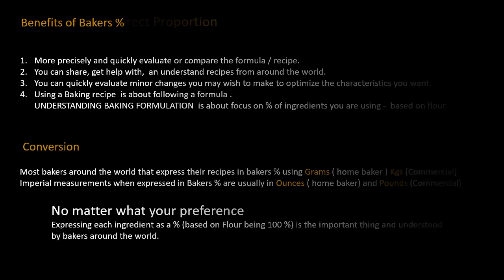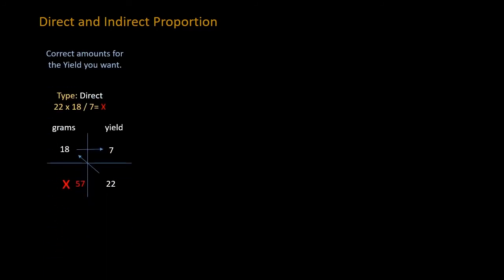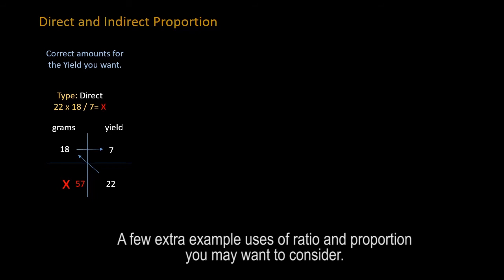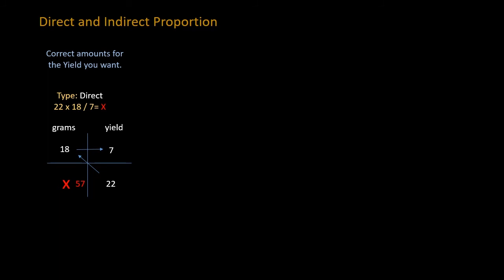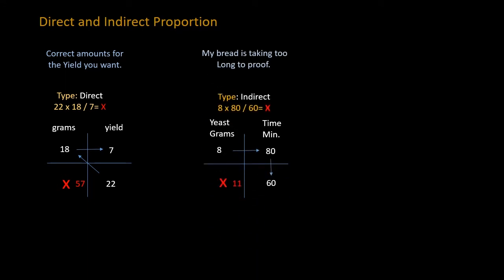Without getting too confusing, you can use direct and indirect proportion for other calculations. For example: a formula using 18 grams of a particular ingredient yields 7 buns, but you want 22 buns. So: 22 times 18 divided by 7 — now you know exactly what you need for that ingredient. There's also indirect proportion. If your bread is taking too long to proof — you use 8 grams of yeast and the proofing time is 80 minutes, but you want to knock it down to 60 minutes — it's 8 times 80 divided by 60: 11 grams of yeast should do the trick.